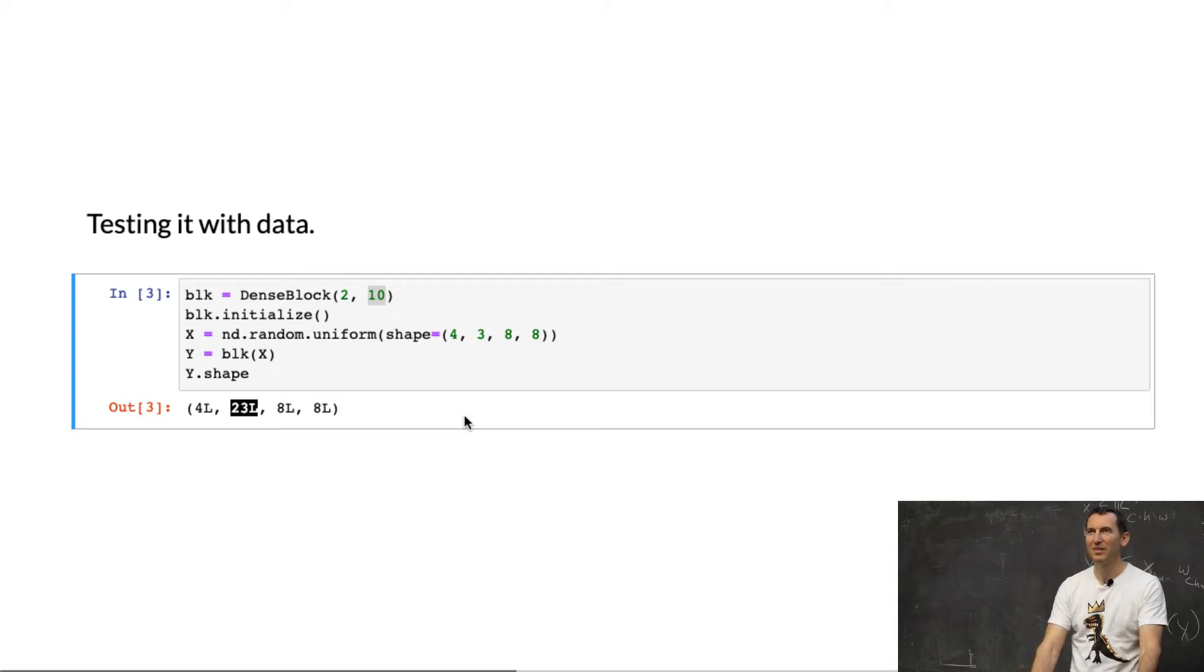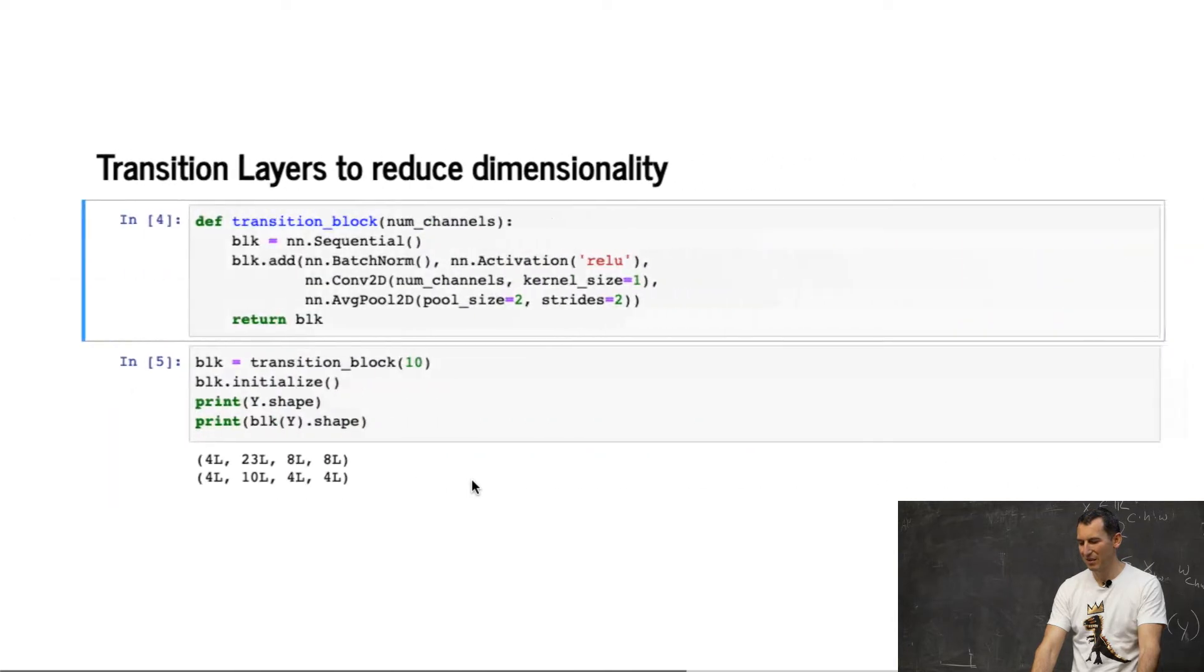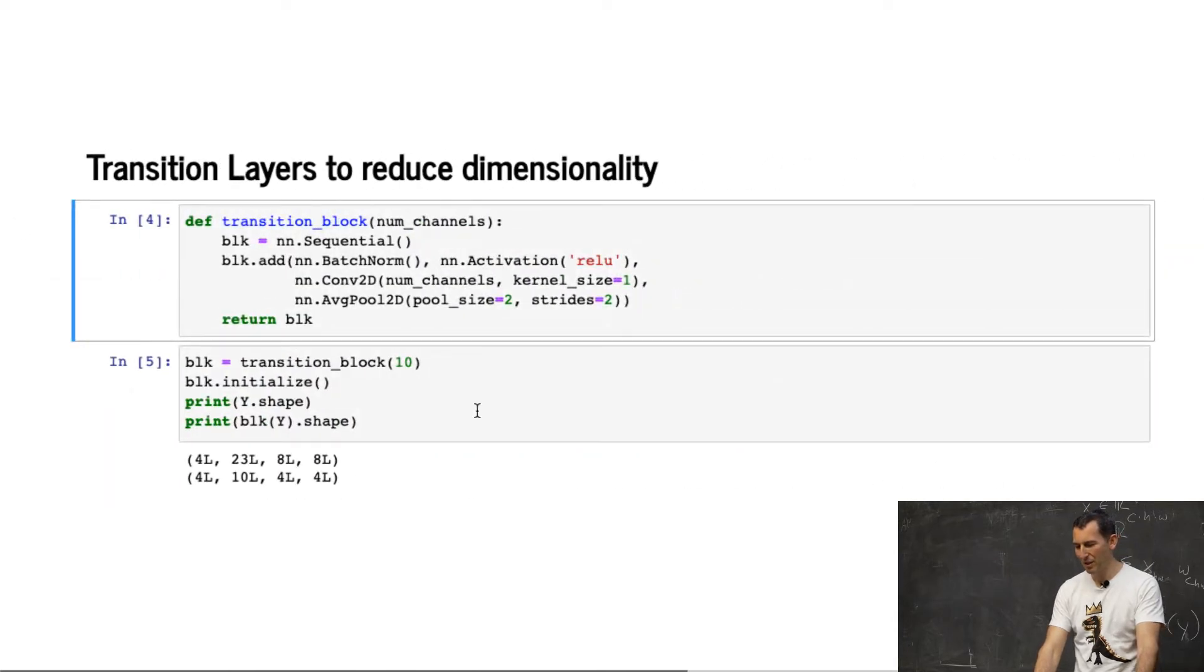And now, of course, if I were to keep doing that forever, the dimensionality would increase without bounds. So, I need to squish it back. One way of squishing it back is you perform another 2D convolution, and we do that conveniently with also reducing the dimensionality.